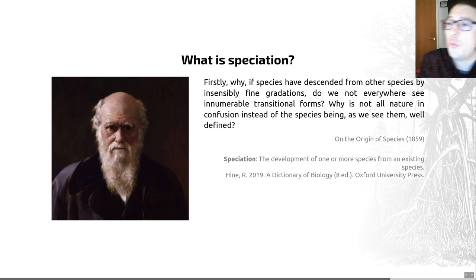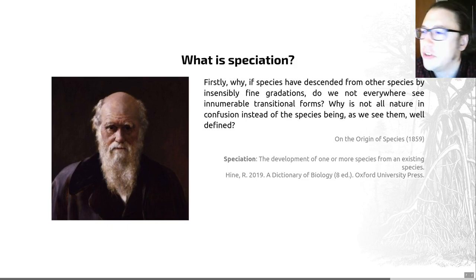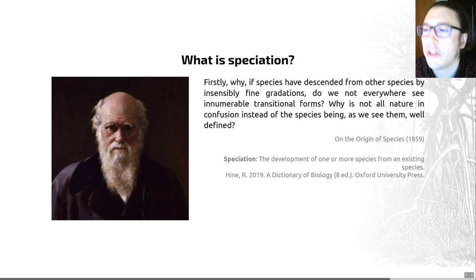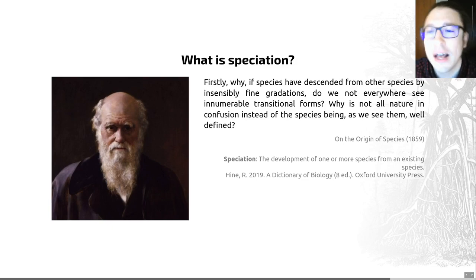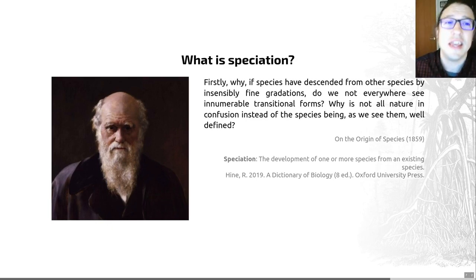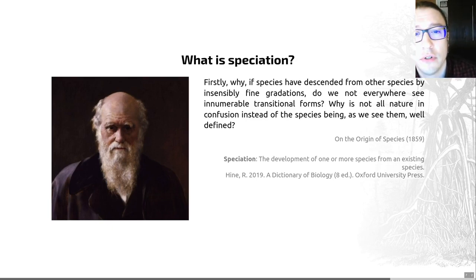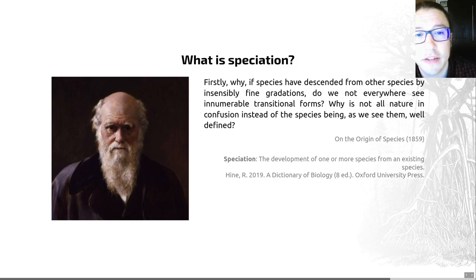Charles Darwin said: 'Firstly, why if species have descended from other species by insensibly fine gradations do we not everywhere see innumerable transitional forms? Why is not all nature in confusion instead of the species being, as we see them, well defined?' And that's a really key and interesting question — one that has been studied ever since.